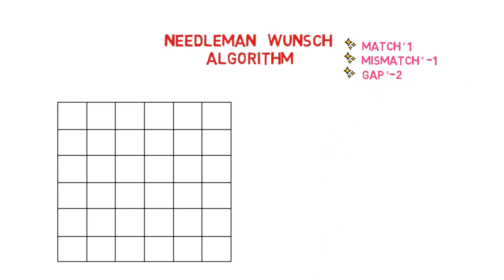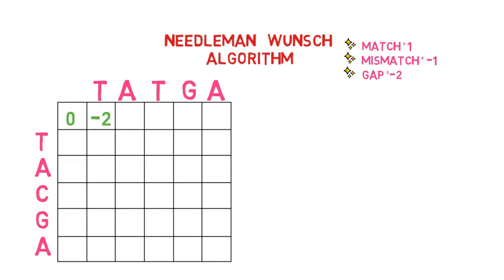So first, we add a gap position for columns and rows, and then we write the desired sequence. Then, by progressively adding the gap penalties, assign the gap values in both the first column and the first row. In this case, the gap penalty is minus 2, and the first row and column will be filled accordingly. Then we must fill in box number 1.